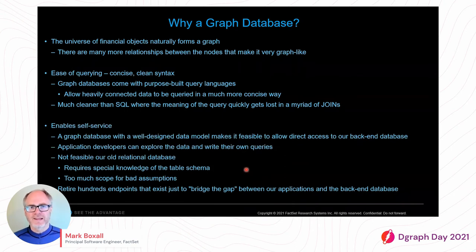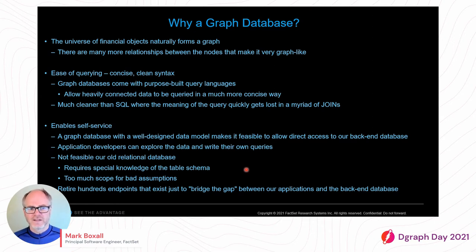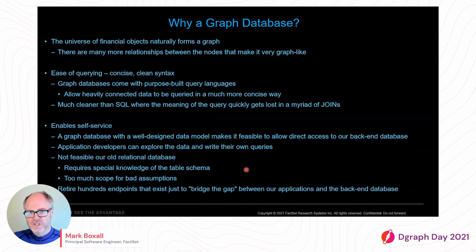The final compelling thing about graph databases was that we felt with a graph database and a well-designed data model, it should actually be feasible to open up the back-end database to all of our internal users and application developers and allow them to explore the data on their own and write their own queries — full self-service to the back-end database. This really wouldn't have been possible with our old relational setup; it would require too much special knowledge of the table schema and there would be too much scope for problems and bad assumptions. The self-service model will eventually allow us to retire hundreds of endpoints that literally exist just to bridge the gap between applications and the back-end database.